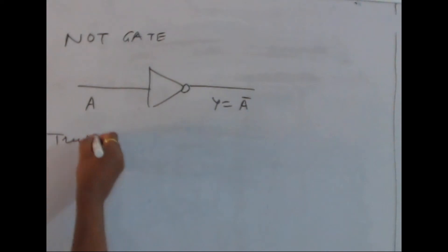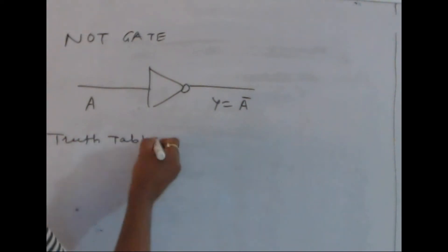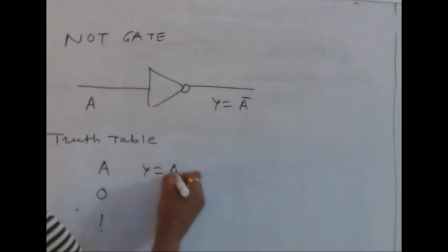The truth table is: if A is given 0, 1, then Y equals A bar which is 1, 0.